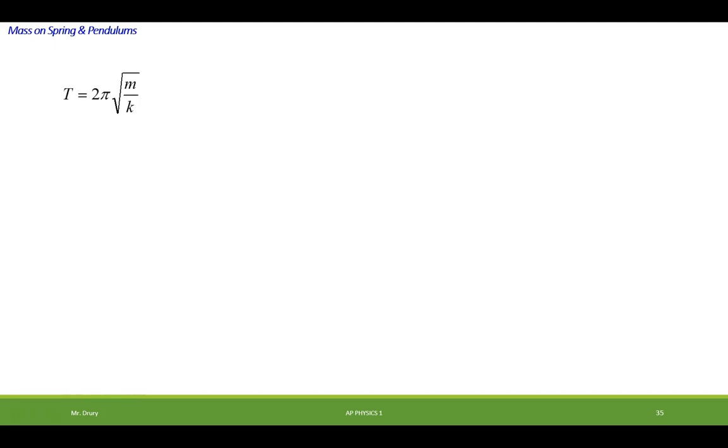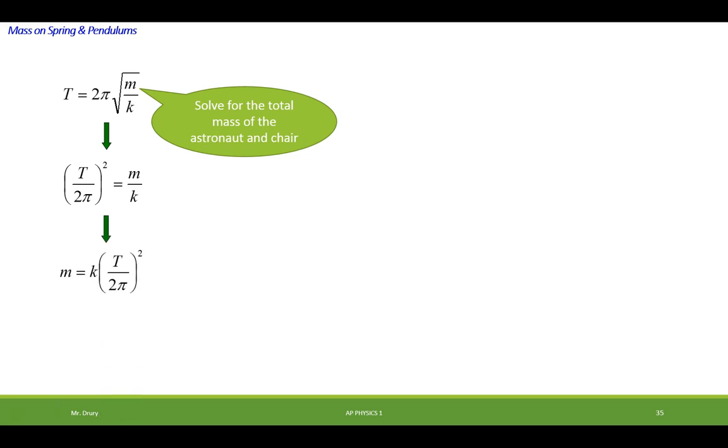So I'm going to start with my equation. I'm going to solve it for the mass of the astronaut in the chair. All right. So I squared both sides and I got the m out. And I solve for m. If you need to take a moment to pause it and look at that math, you can. And then I put the values in. By putting the k, the period, over 2 pi squared. And it came out with a mass of 89.2 kilograms.